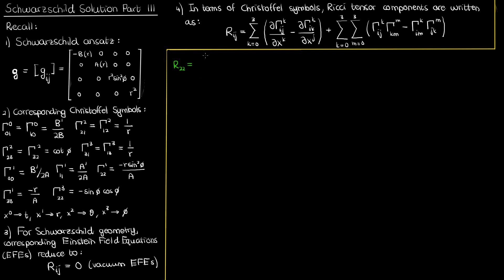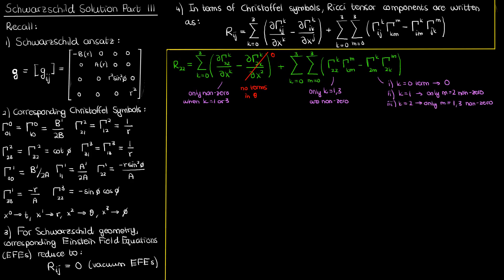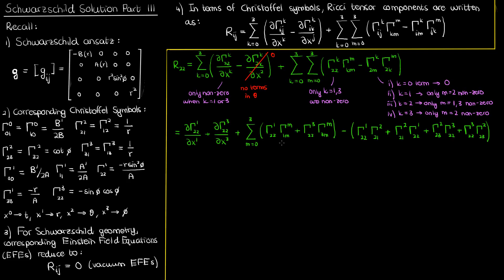Lastly, let's calculate the R₂₂ component of the Ricci tensor. Plugging in i equals 2 and j equals 2, here's what our formula becomes. The first partial derivative is only non-zero when k is 1 or 3. The next partial derivative term is always zero because none of our non-zero Christoffel symbols contains a theta term, and x² represents the theta coordinate. For the third term, the k-2-2 Christoffel symbol is only non-zero when k is 1 or 3. For the fourth term, k equals 0 is always zero; k equals 1 is non-zero only when m equals 2; k equals 2 is non-zero when m equals 1 or 3; and k equals 3 is non-zero when m equals 2.